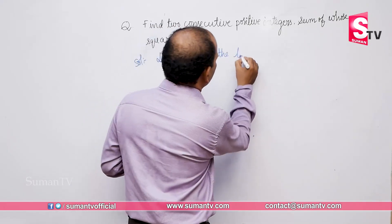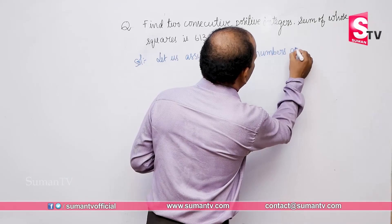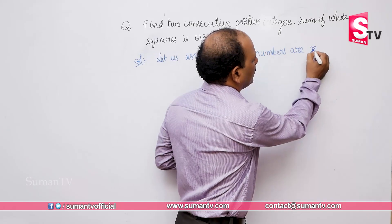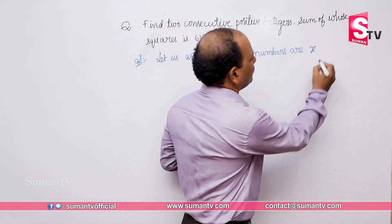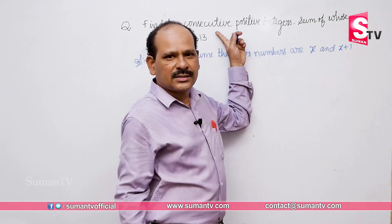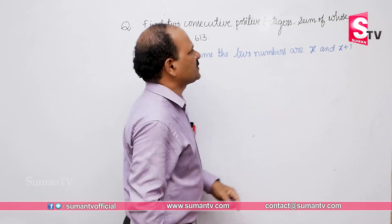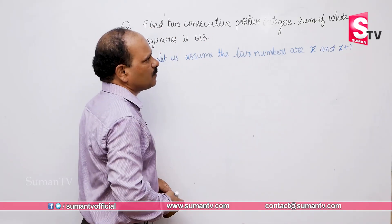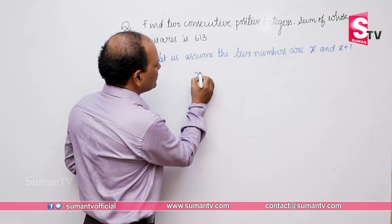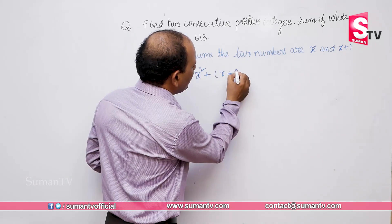Now let us assume the two numbers. I am assuming the first number as X, then the next number will be X plus 1. That number and the next number are consecutive numbers. So if the first number is X, then the next number will be X plus 1.